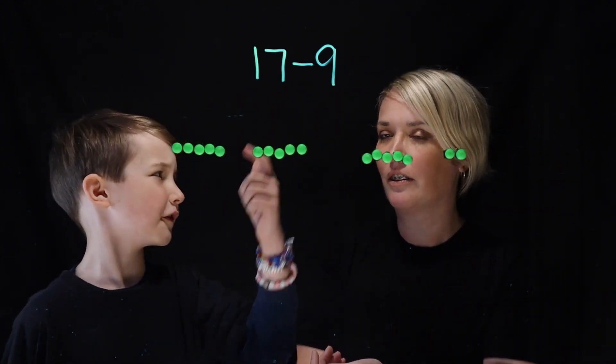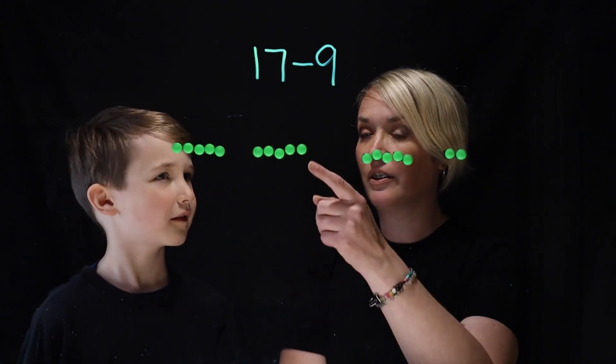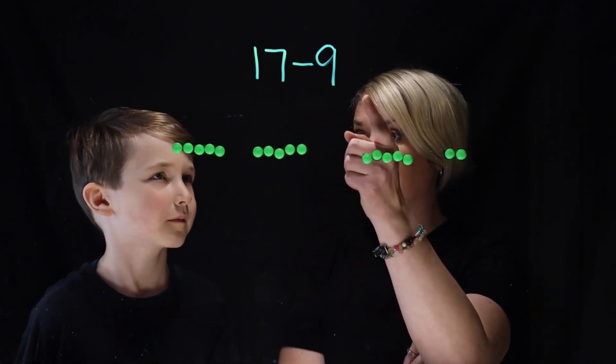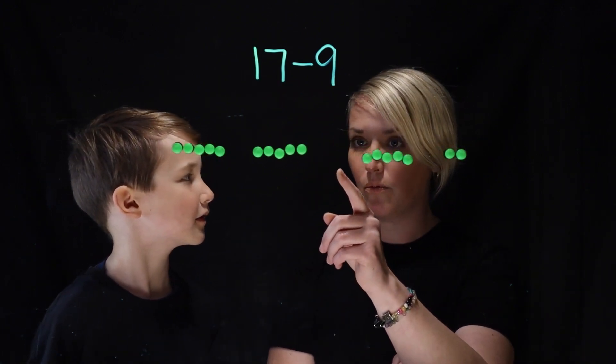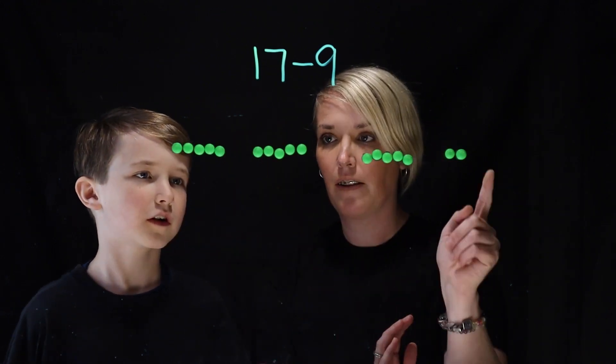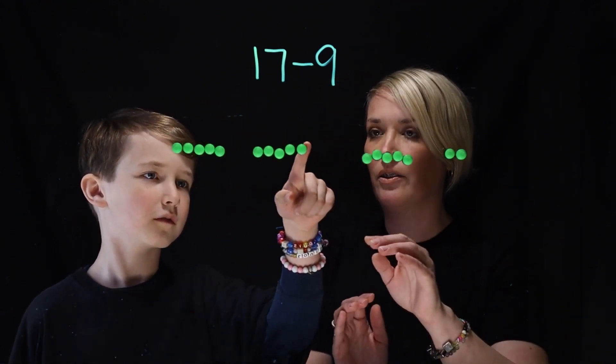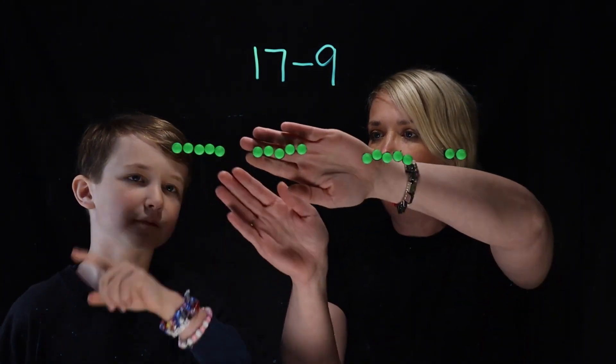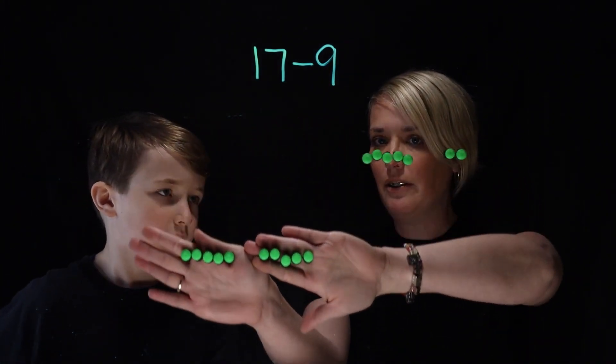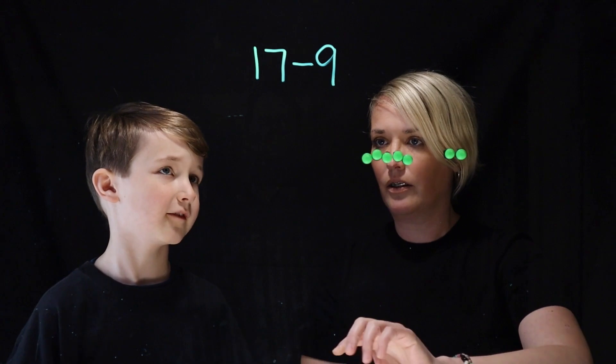We're going to add a 1 onto the 9. Oh, so you're going to think about 17 minus 10. Yeah. So where's the 10 here? Um, well, here's a 10. There's a 10. Okay, so we're going to go 17 minus 10. So we will take these away. Yeah. And then there's 7. Yeah.